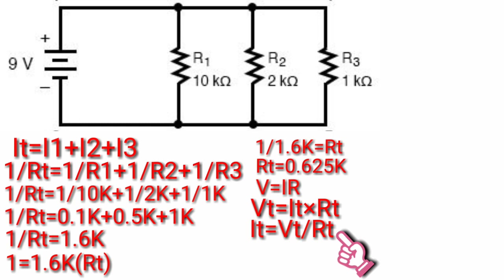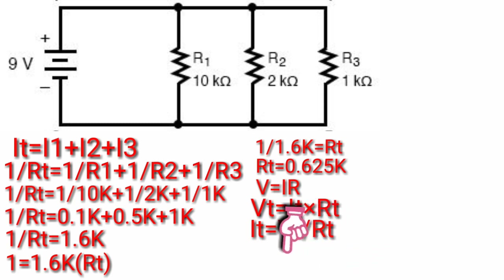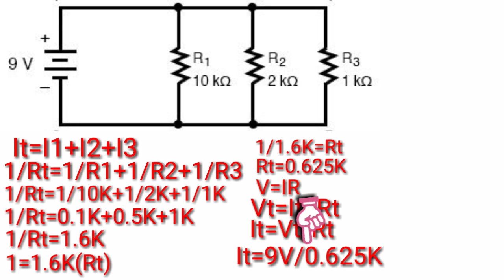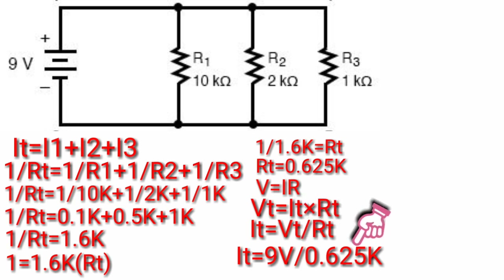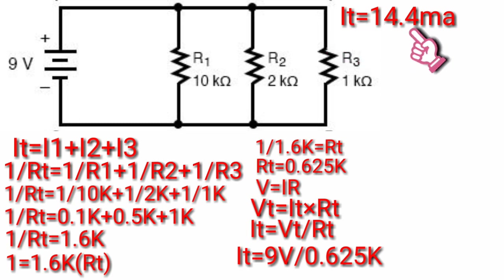Substituting the total voltage and total resistance into the equation: IT is equivalent to VT, 9V, divided by RT, 0.625K. So IT will be 14.4mA.